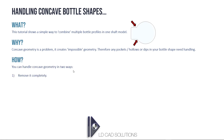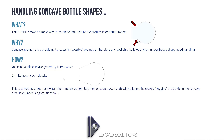So how can we handle this? There are actually two ways. The simplest way is to remove the hollow area completely from the bottle shape itself — just fill in the hollow area. This is the simplest option, but then your shaft will no longer be closely hugging the bottle in the concave area.